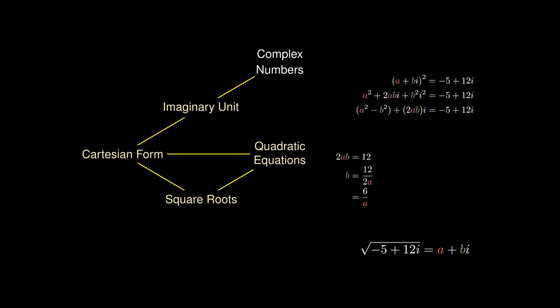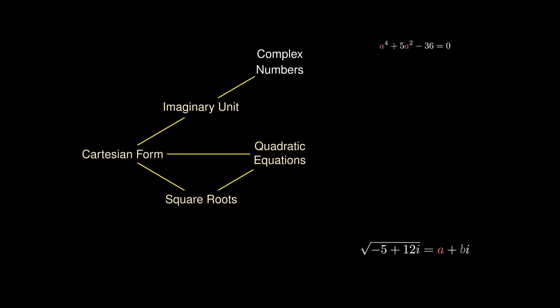We also know that the real parts must correspond: a² - b² = -5. Since b = 6/a, we substitute and simplify using algebra to obtain the equation a⁴ + 5a² - 36 = 0.